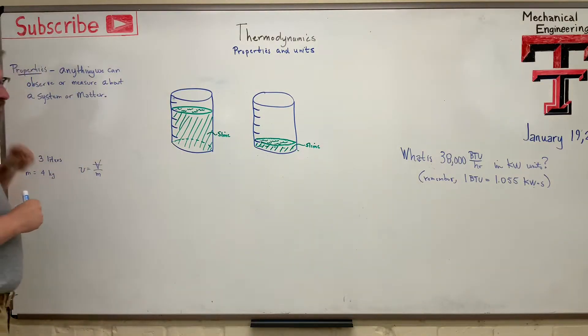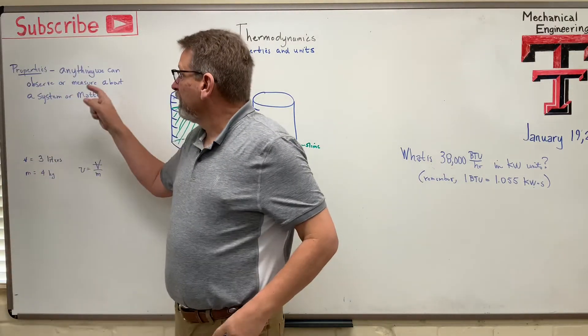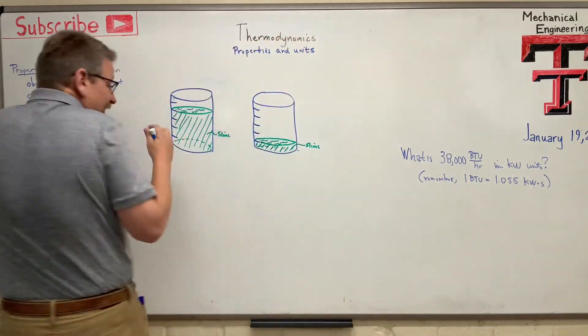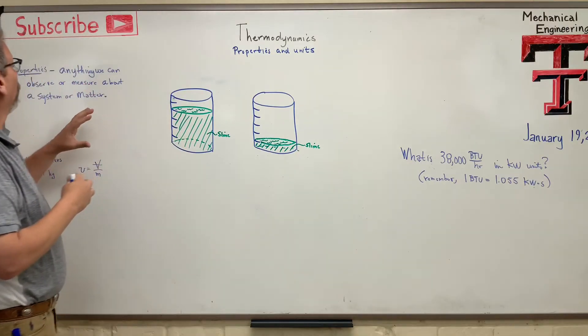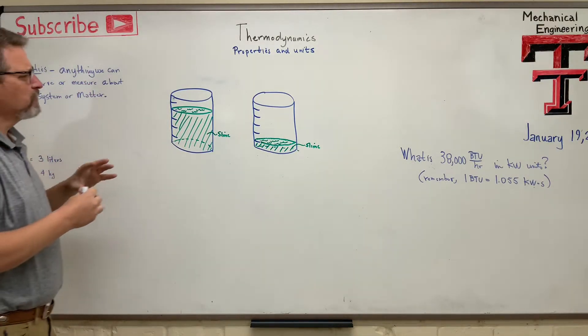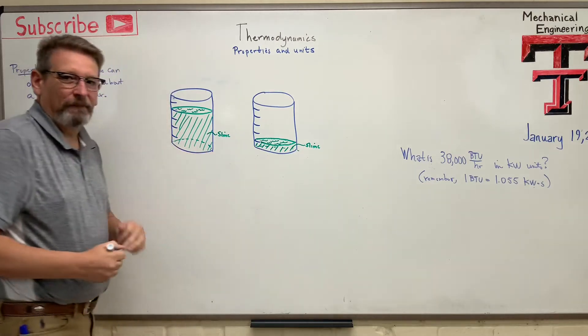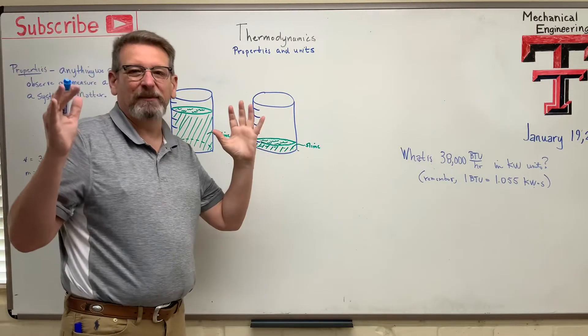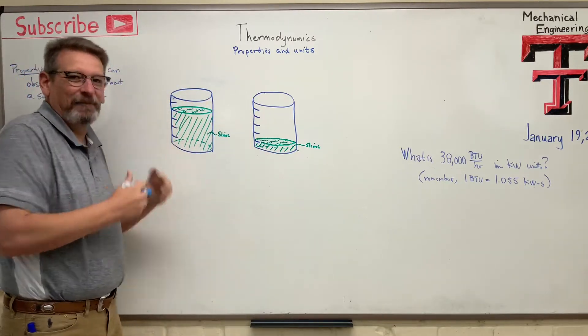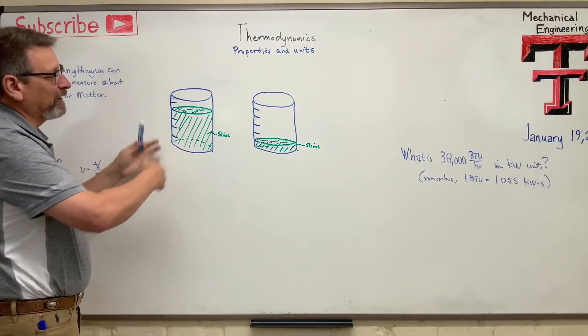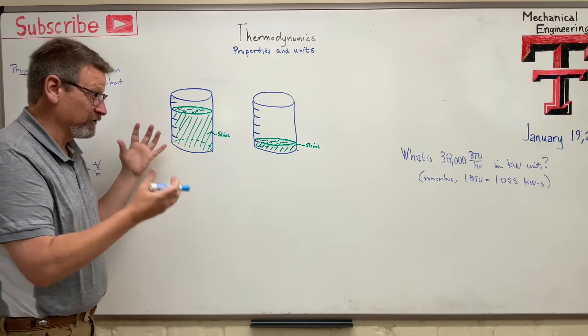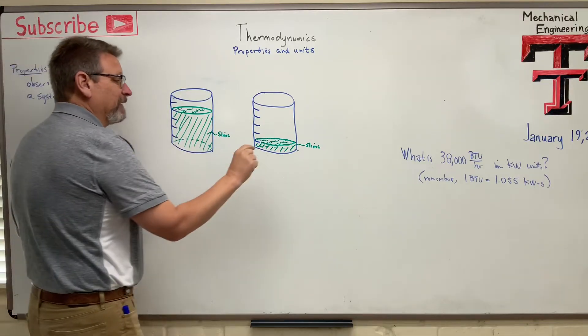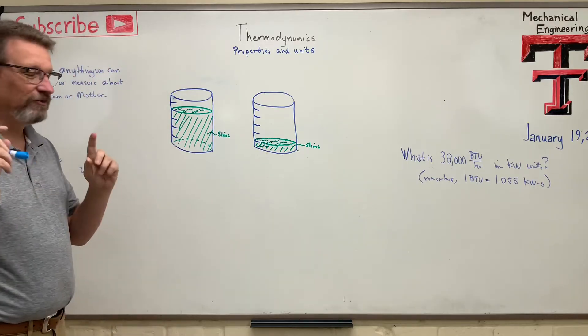So, remember properties. Let me stand over here. Properties are anything that we can observe or measure about a system or matter, okay? So anything we can observe or measure. For example, I've drawn two beakers here on my board. And I put some slime in it. It's just some kind of matter. We don't know what it is, it's slime, okay? We've got one that has quite a big volume in it and one that's got quite a small volume in it. So let's just talk about those.